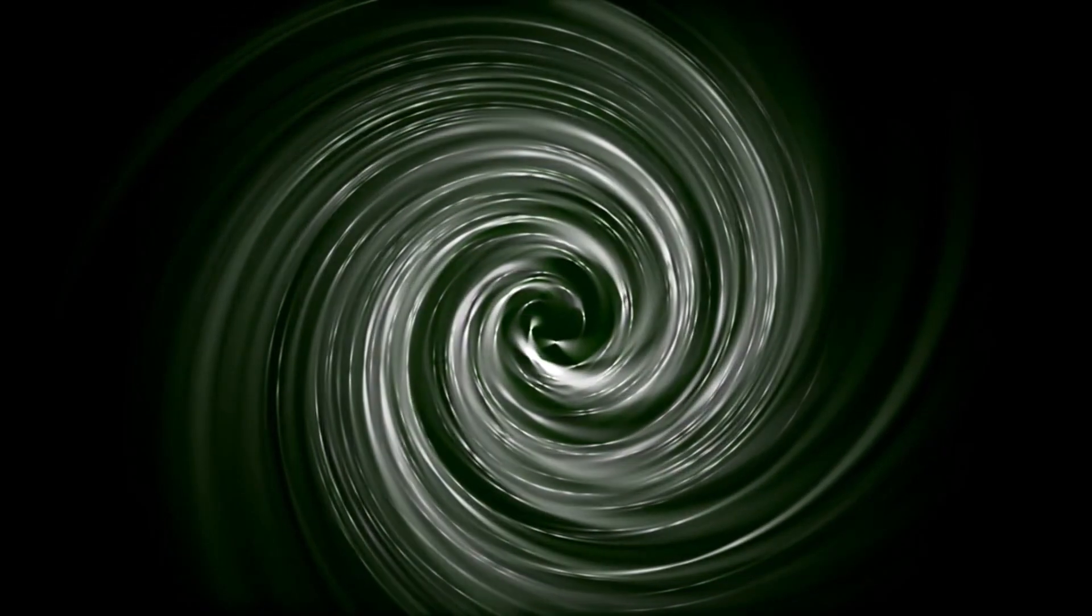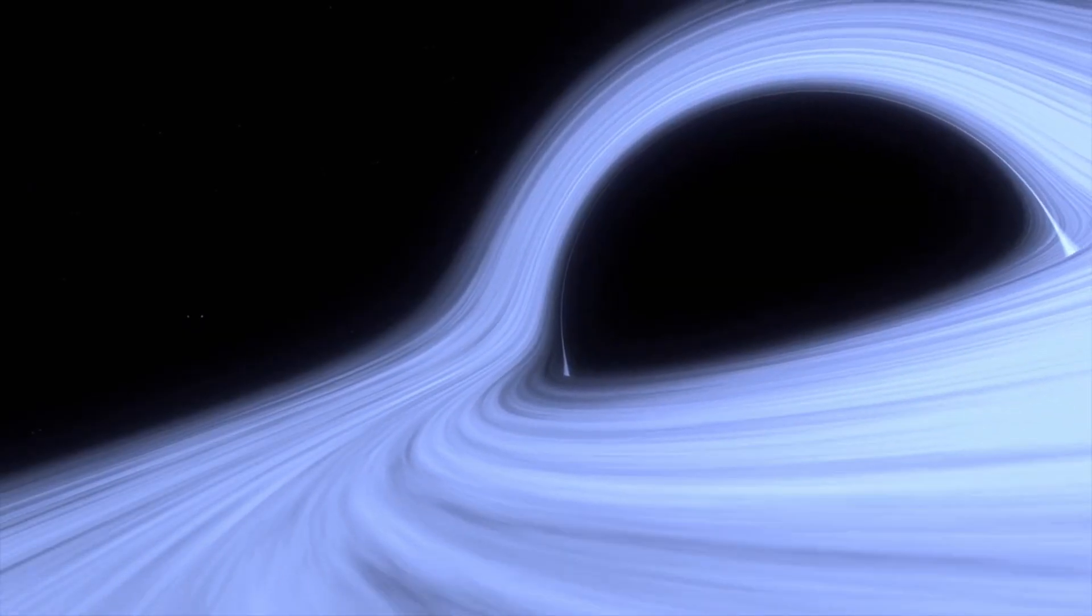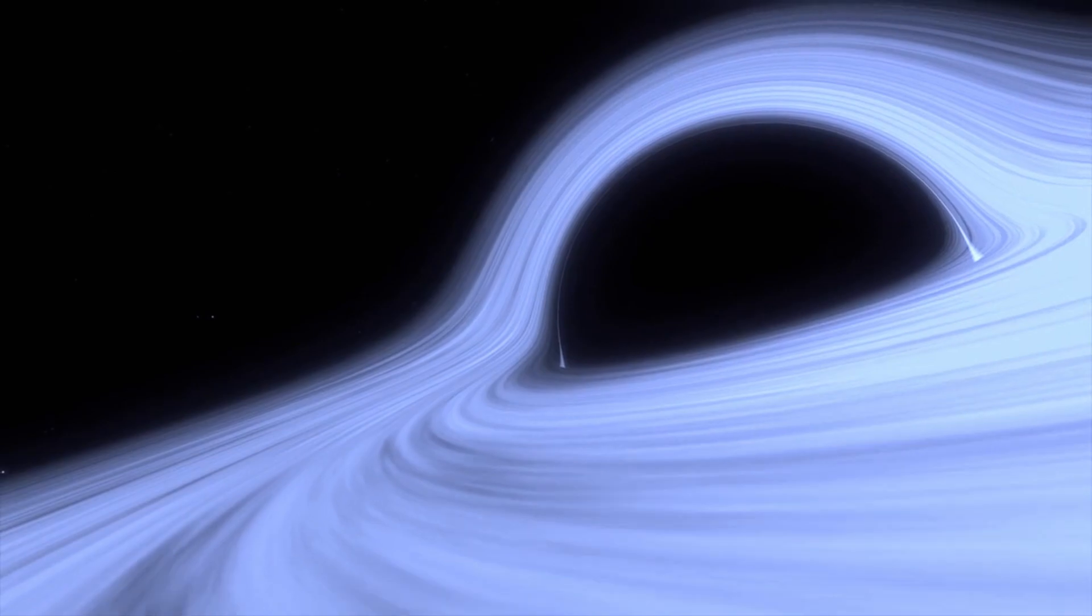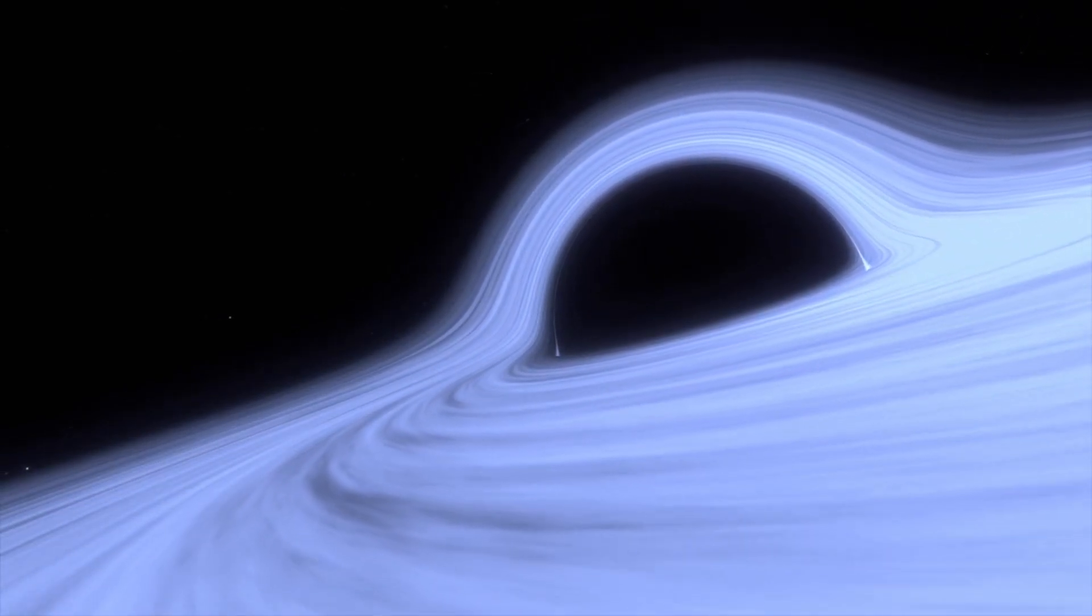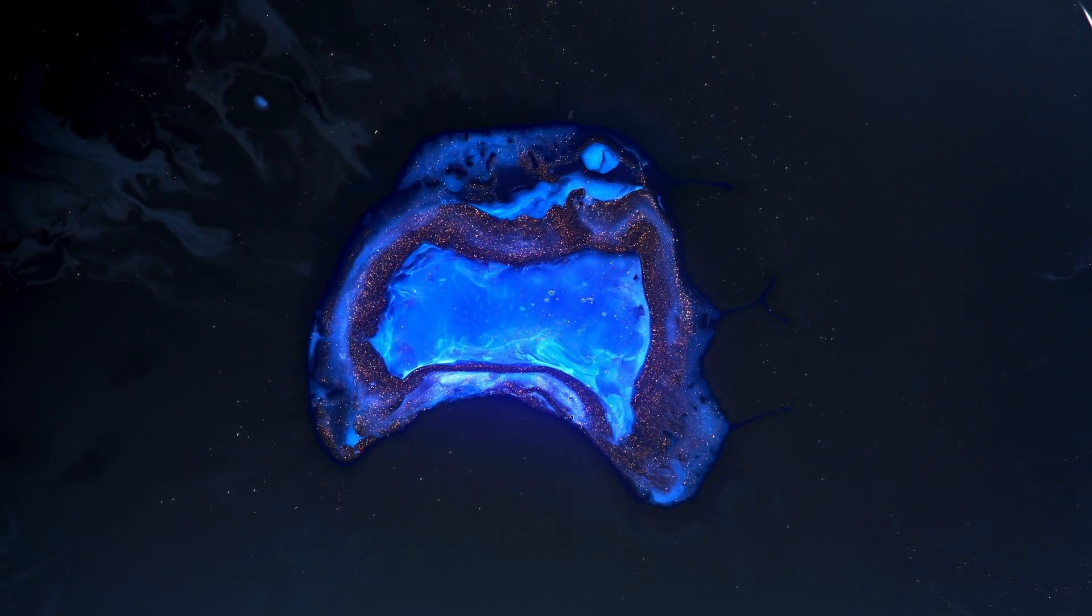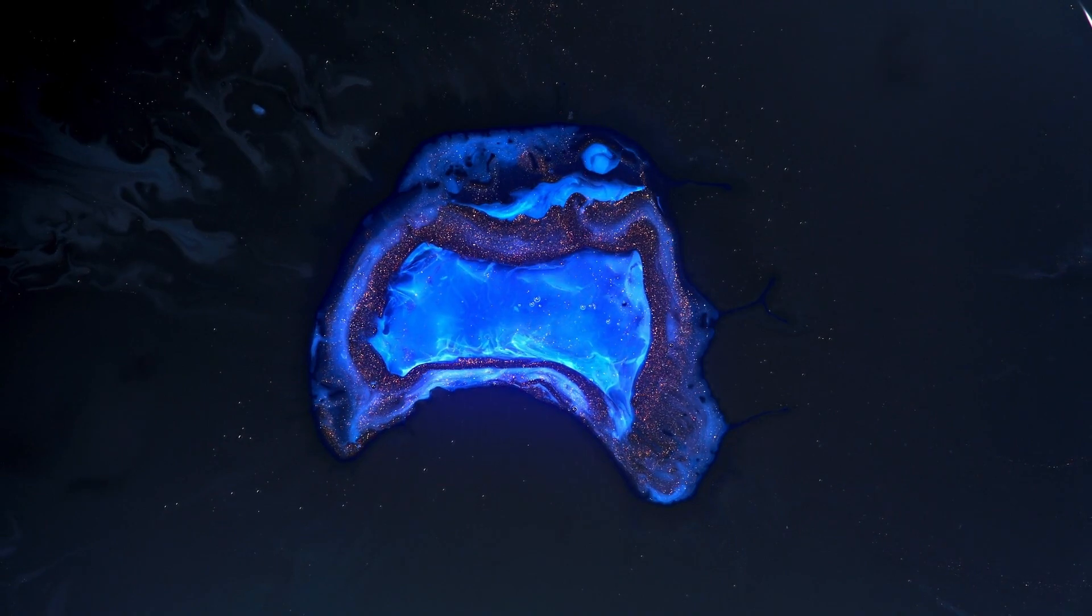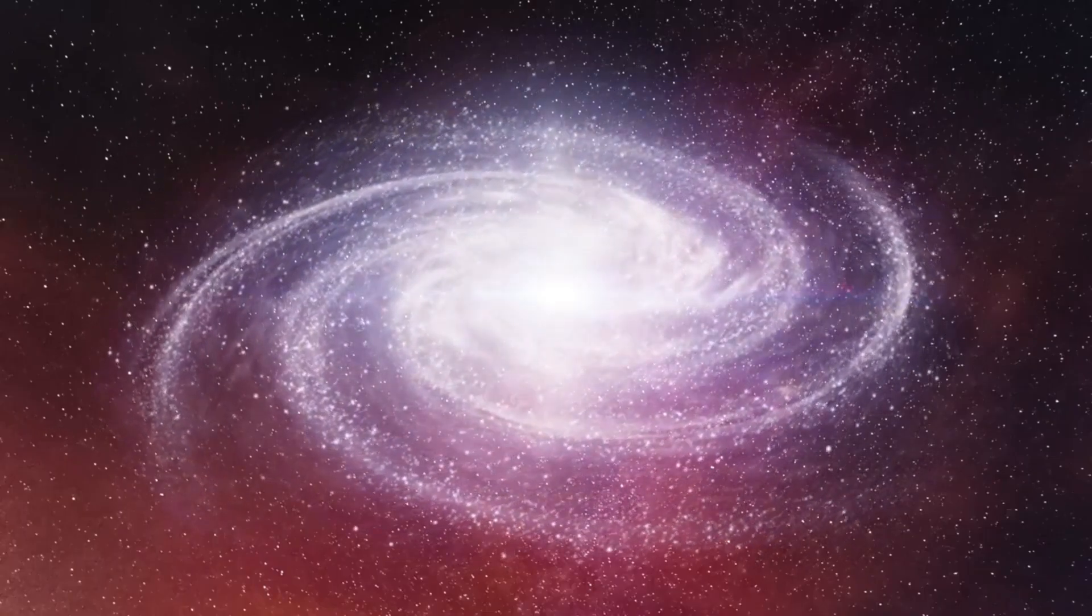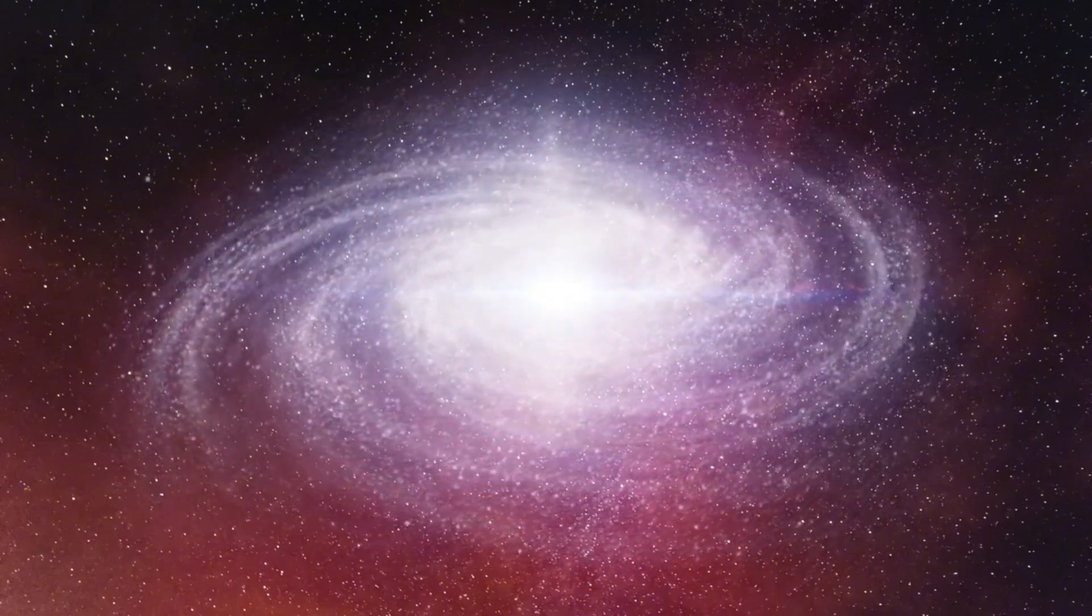In fact, a black hole consists of three distinct layers. The first layer is called the event horizon. Once an object crosses this boundary, there is no turning back. It will inevitably be drawn into the black hole. The second layer is known as the photon sphere, a region where light itself can be trapped in orbit around the black hole. Any light entering this area will become ensnared by the black hole's gravitational force, unable to escape.